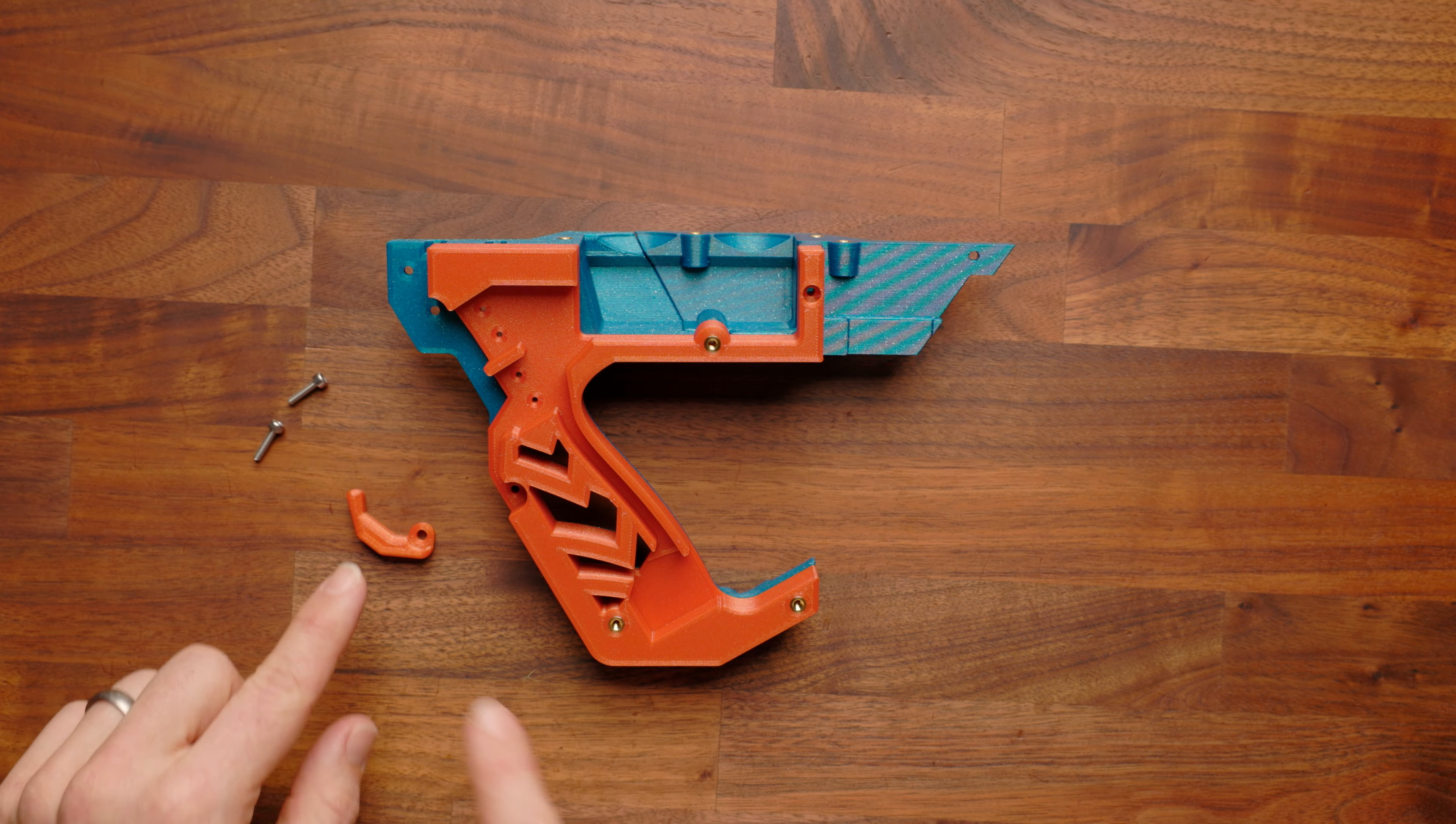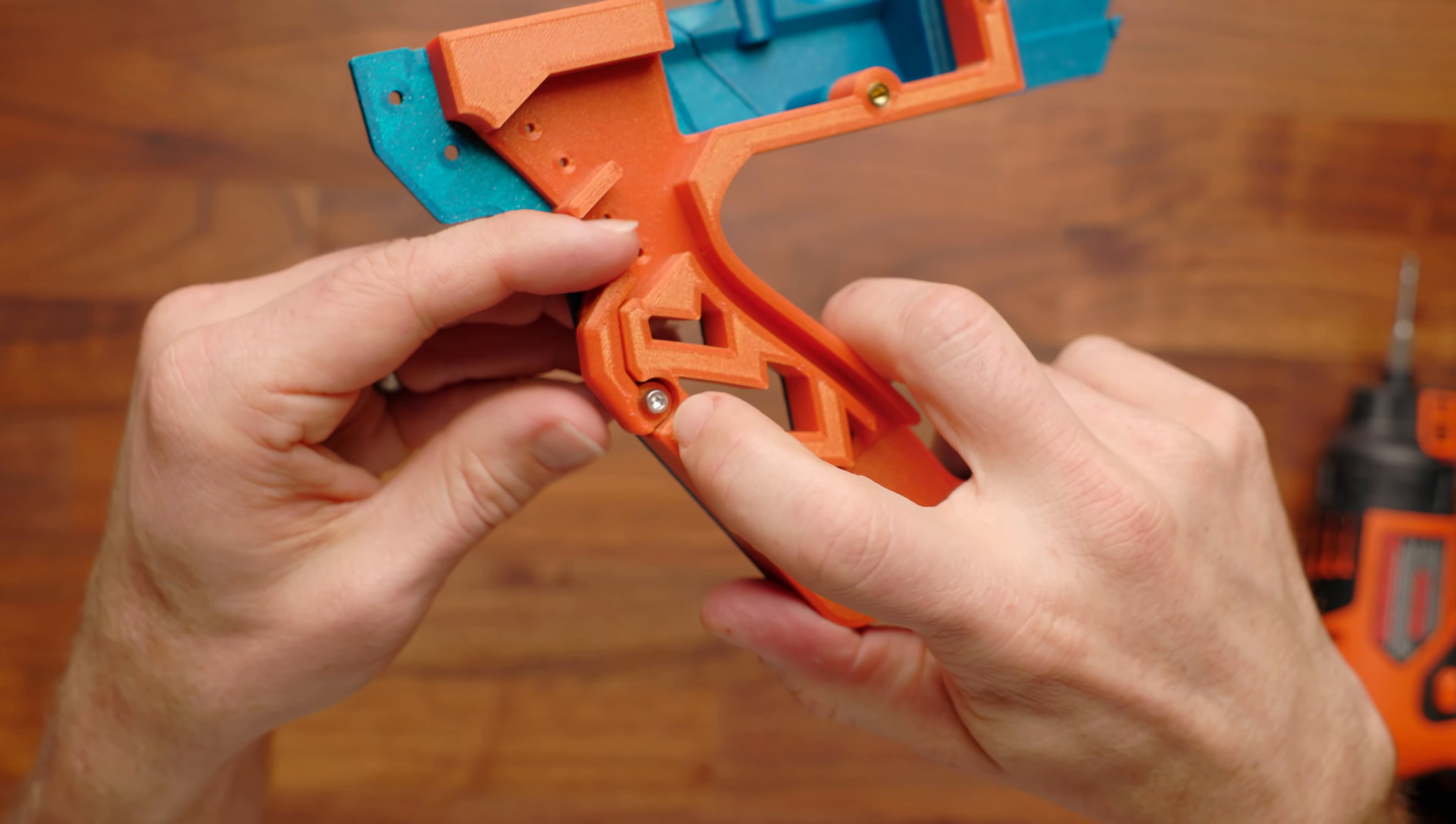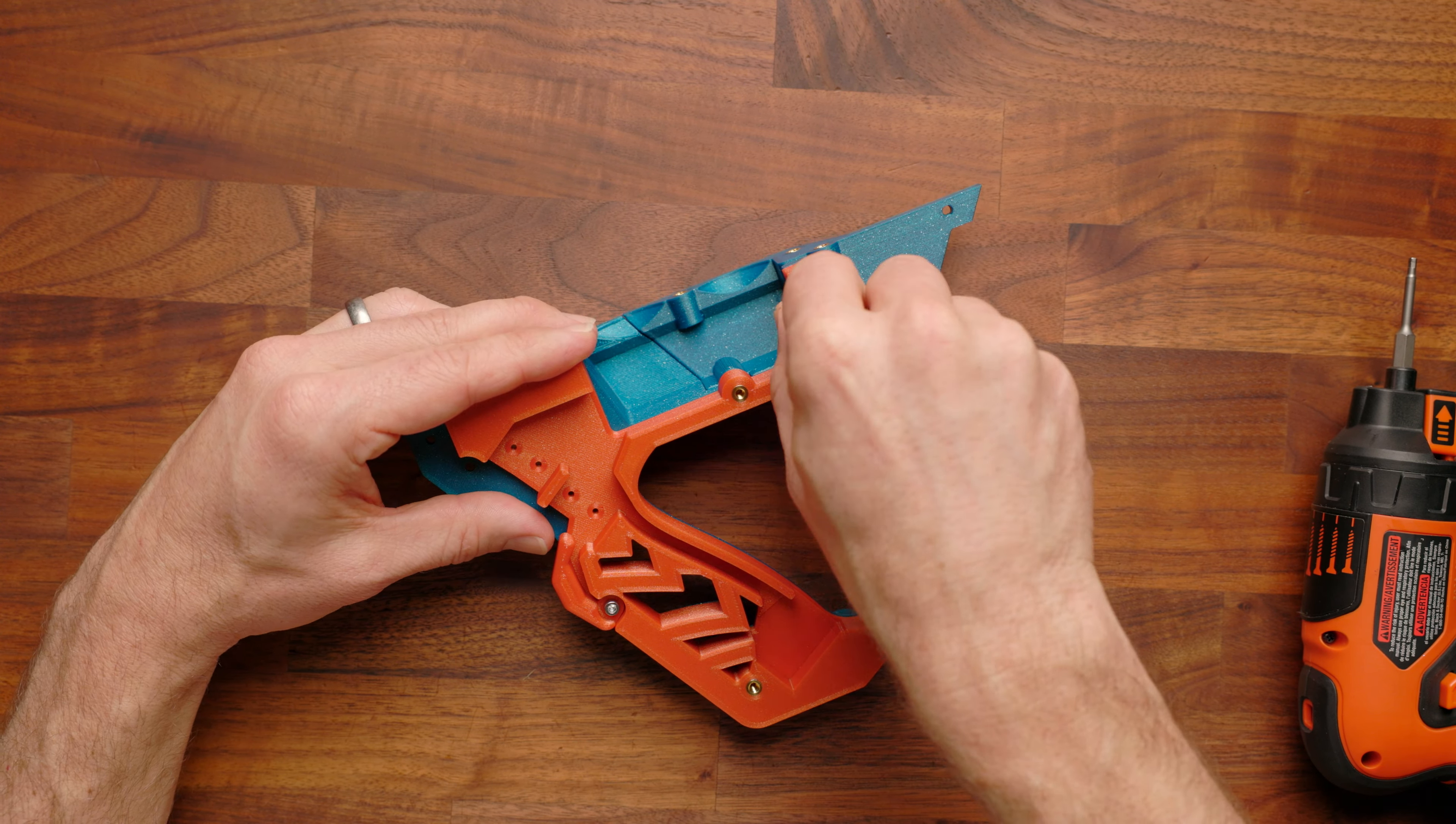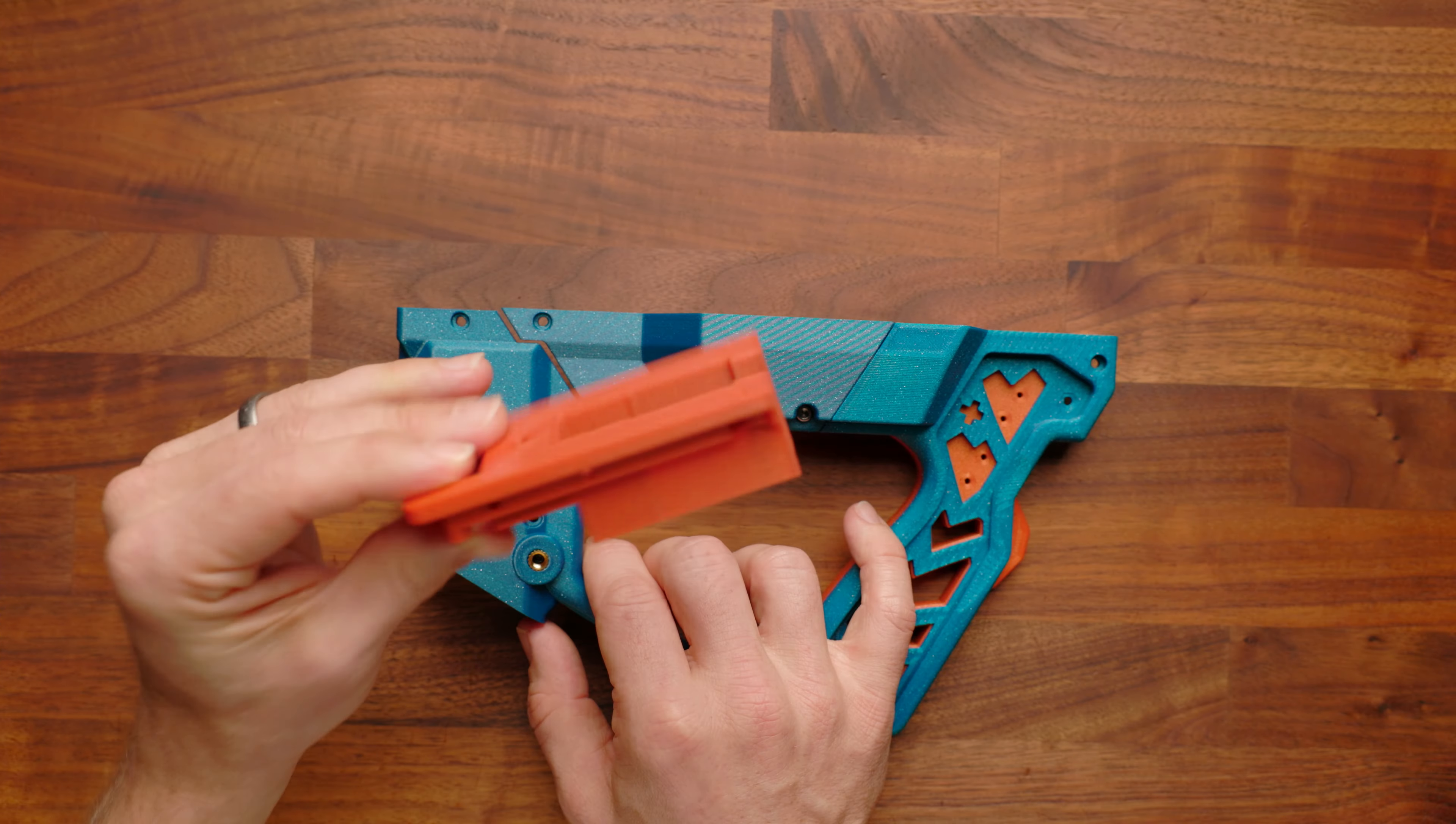Next, you're going to need two 12-millimeter screws and your rev trigger. You're going to take one screw through the rev and through here, and you don't need that to be fully tight. You can tighten it all the way and back it up slightly, or just have it just short of full tightness. Then you're going to take the next 12-millimeter screw and you're going to place it back here. Next, you'll need one 16-millimeter screw to go through this hole here, connecting the back half of the right shell to the front half.